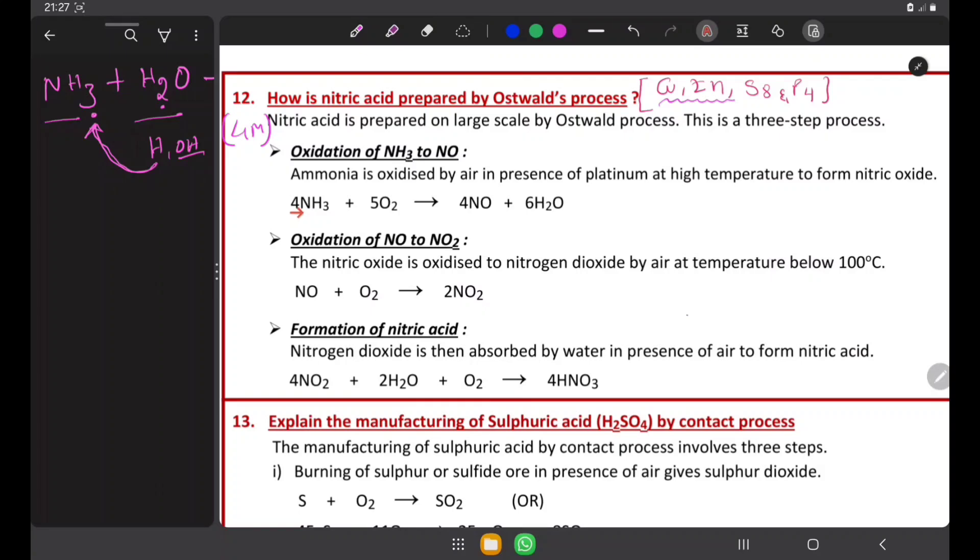Here you have to remember the reaction 4NH3 + 5O2 gives 4NO + 6H2O. To remember this reaction, most of the students get confused while learning or remembering this reaction.